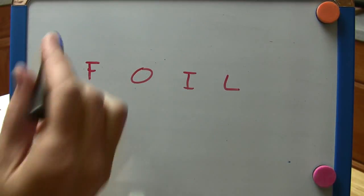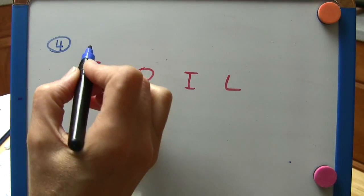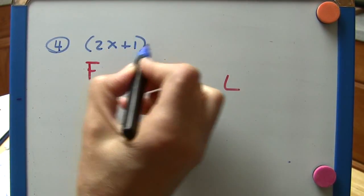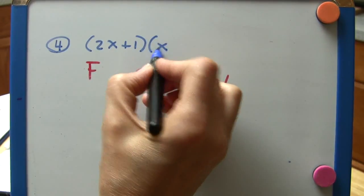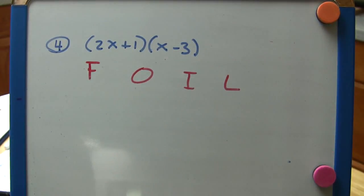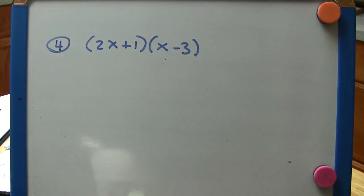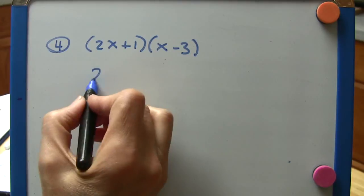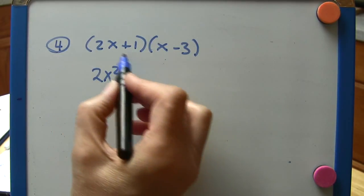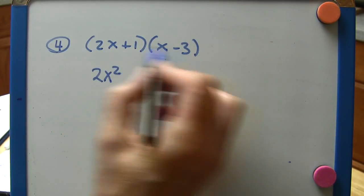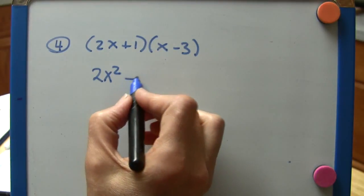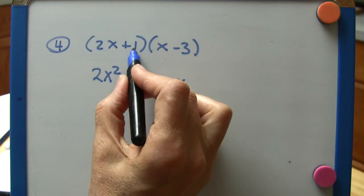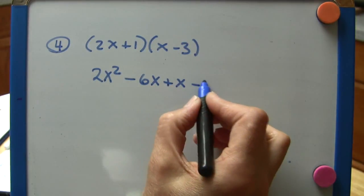And for one last example here, number 4, we're going to have 2x plus 1 times x minus 3. 2x times x is 2x squared. The outer is 2x times minus 3, that's minus 6x. The inner is plus x. And then the last is 1 times negative 3, which is negative 3.